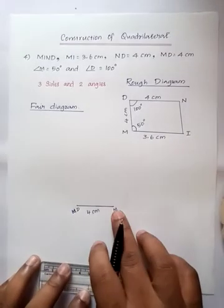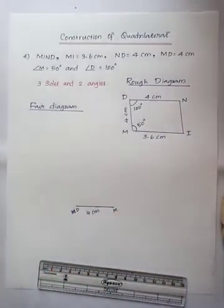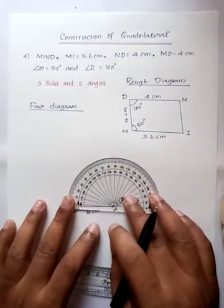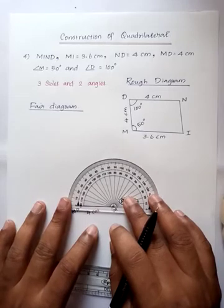Next, from M, angle is 50 degrees. Angle M, 50 degrees mark.